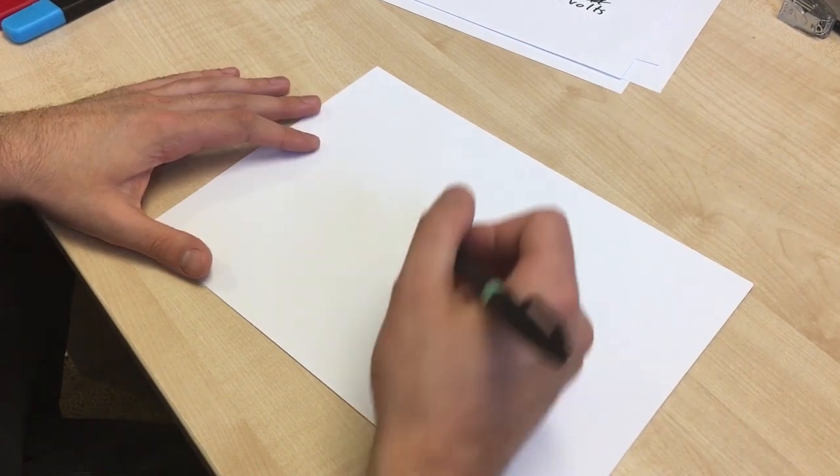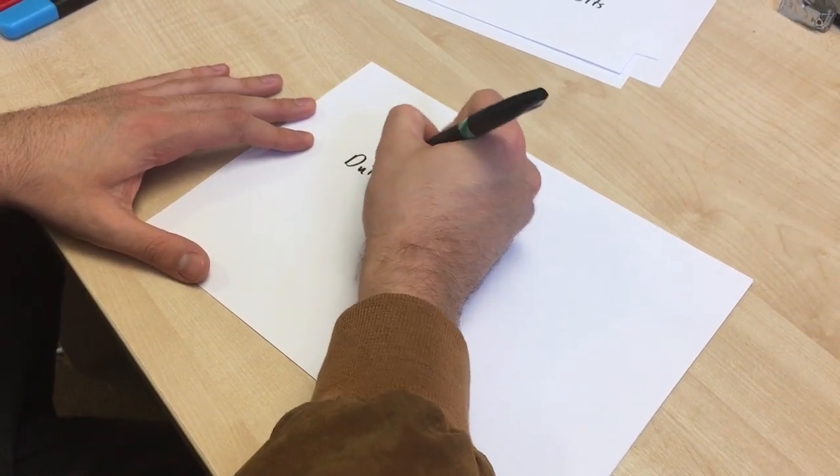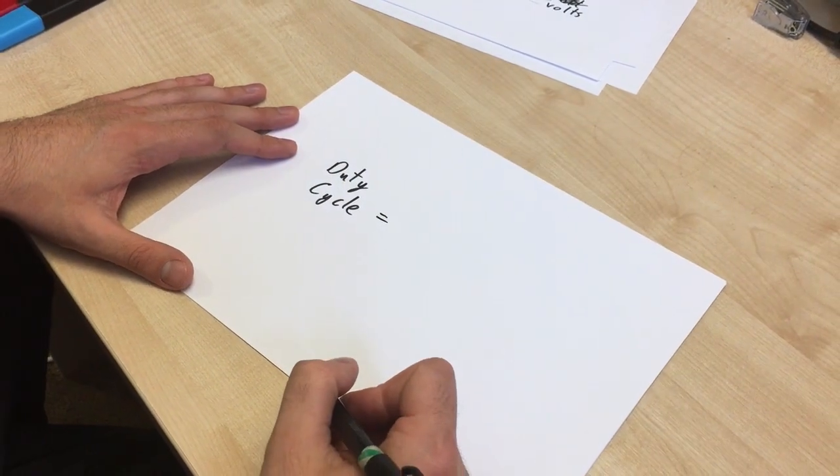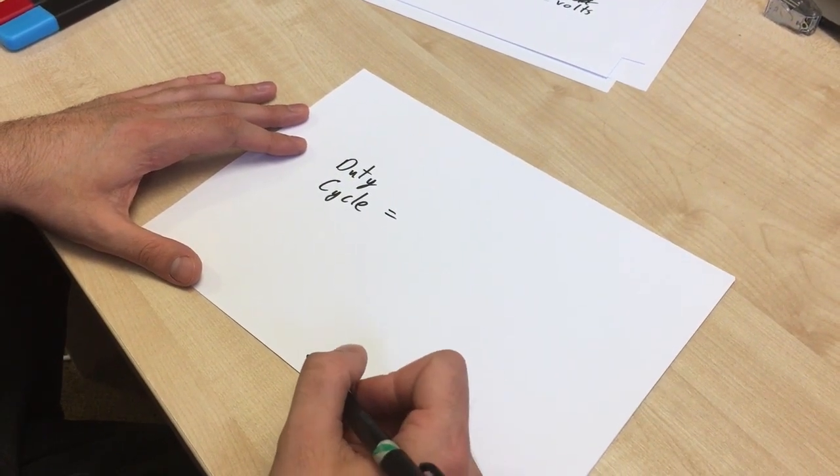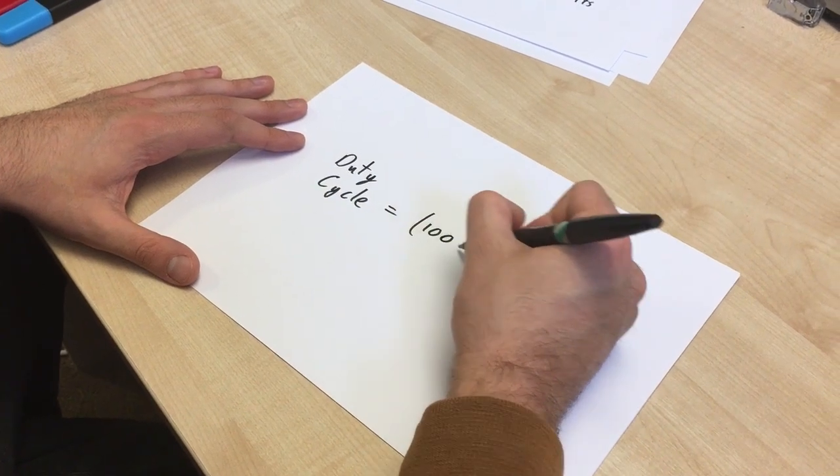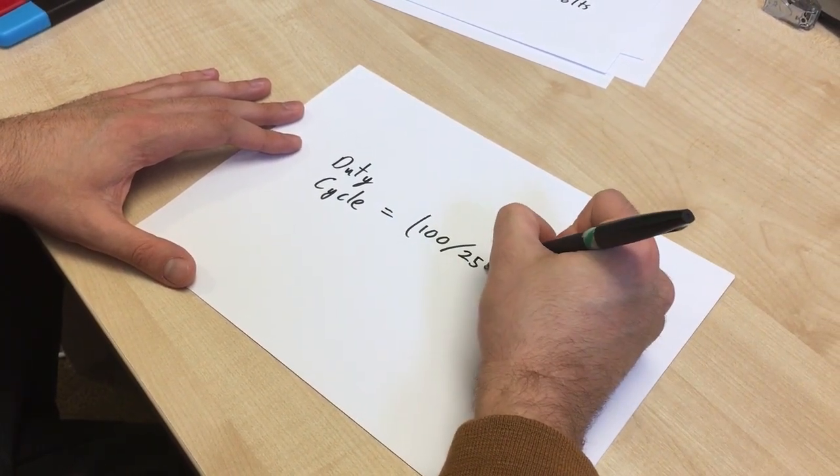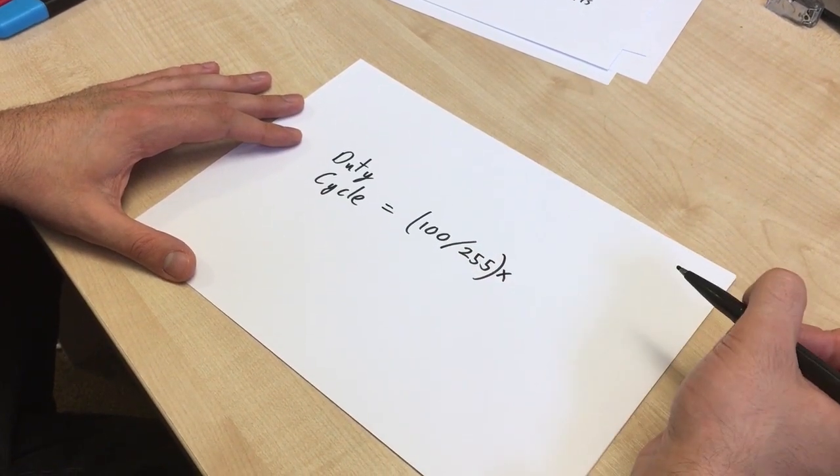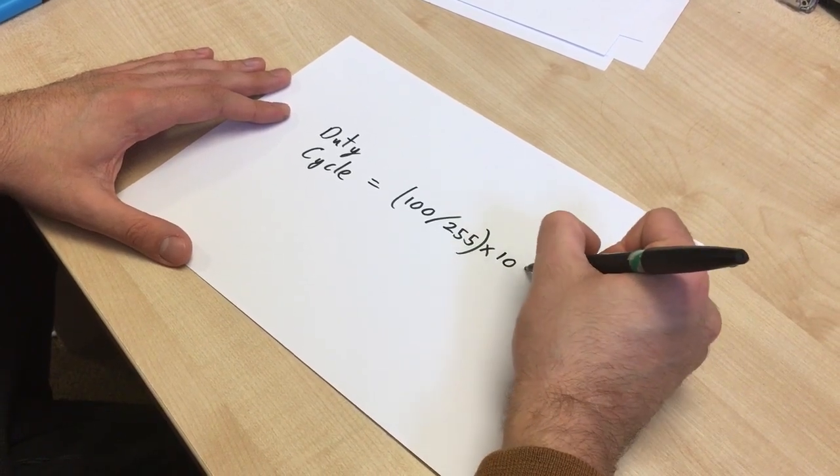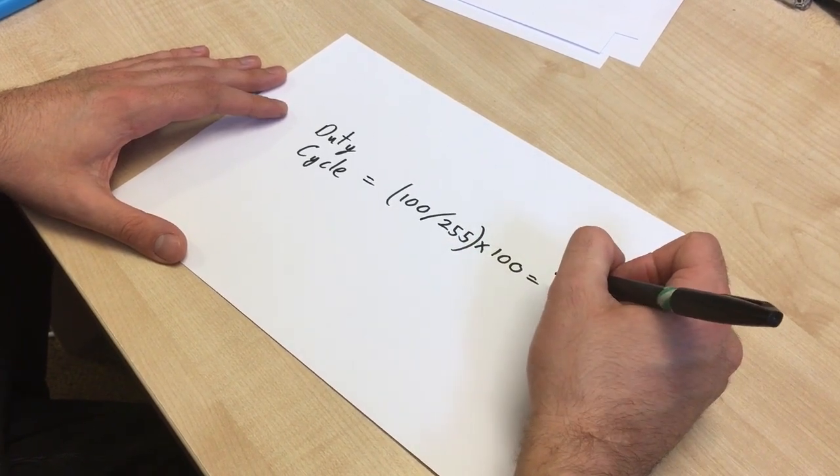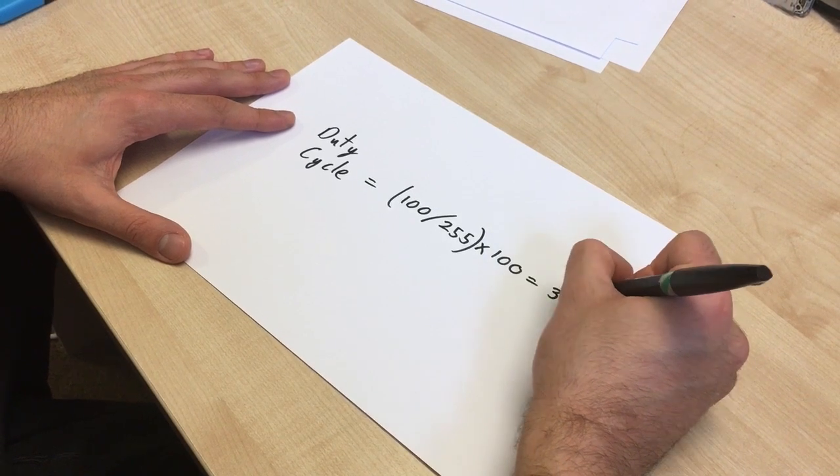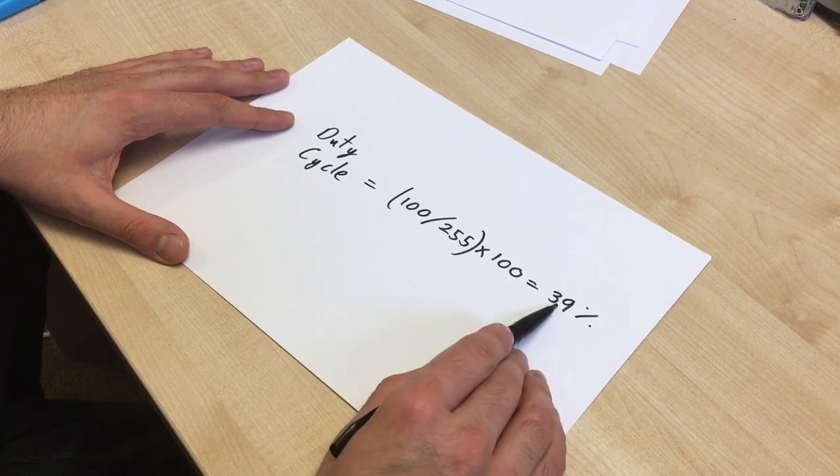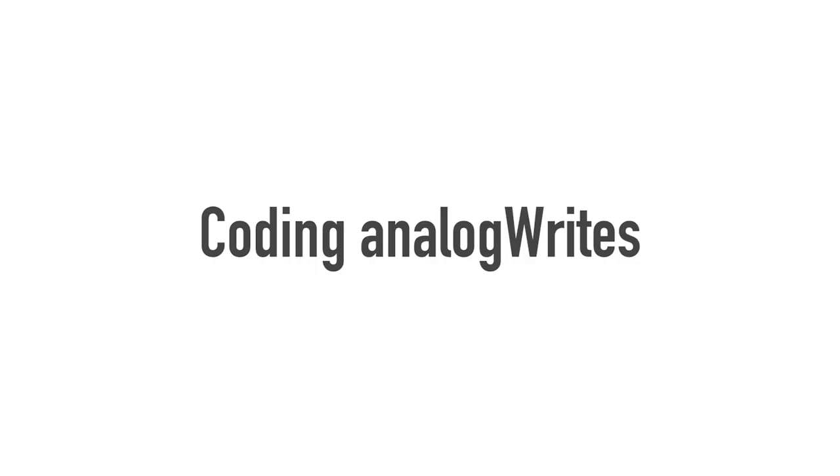If you wanted to work out the duty cycle, it's a similar calculation. So, for the duty cycle, it's equal to, and again, if we had 100 as the analog write value, we'd do 100 divided by the max value, which is 255. And that will give you a decimal number. So, to turn that into a percentage, we times it by 100. 39%. So, the duty cycle of an analog write of 100 would be 39%.